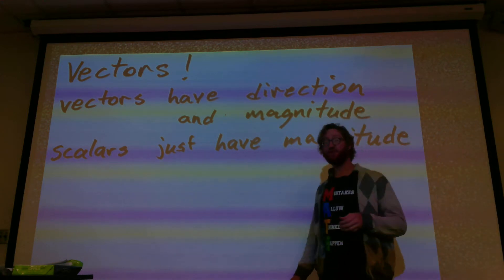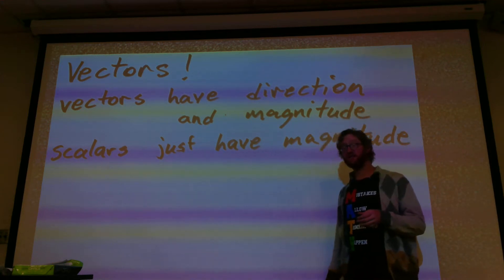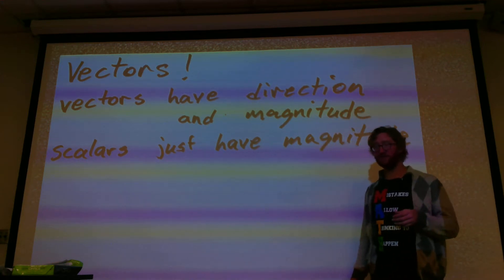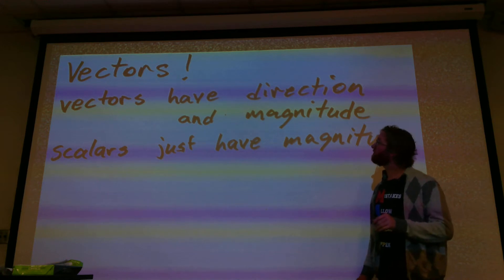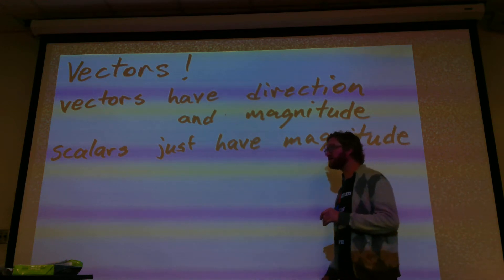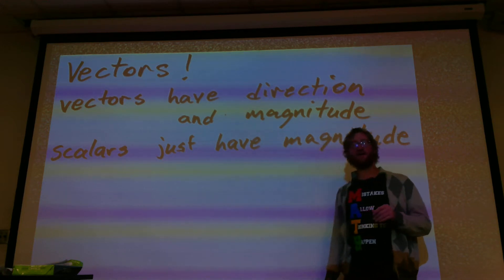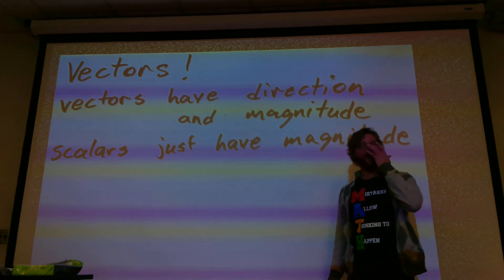You can multiply a scalar times a vector, but you can't cross it. So let's look at the parallelogram rule.